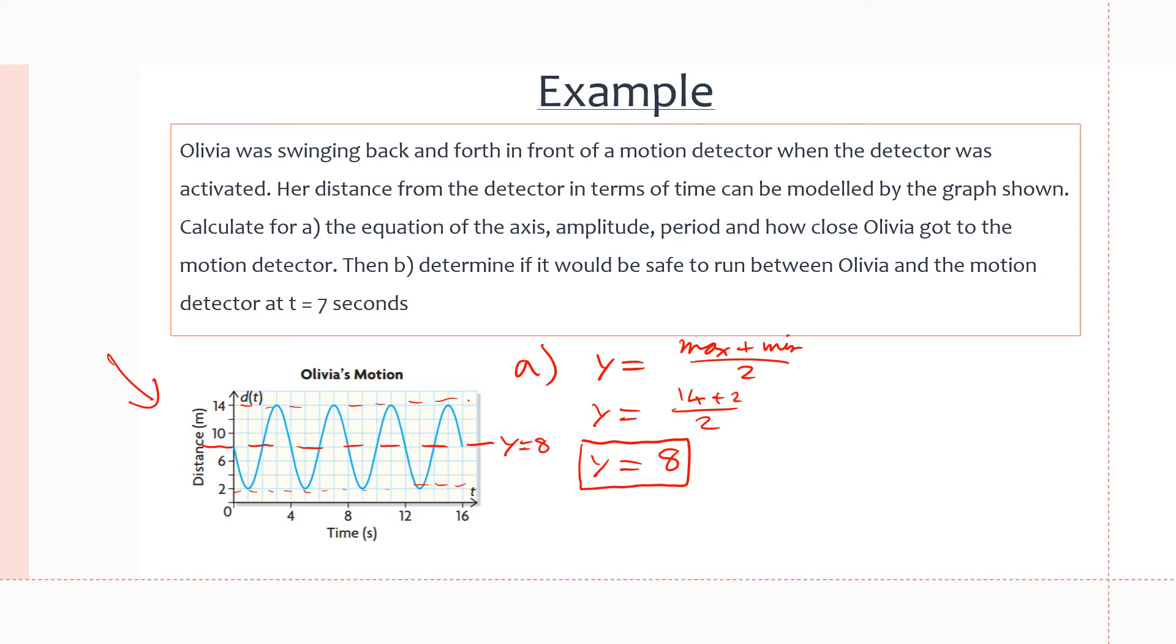Next, we want the amplitude, and the amplitude is the distance between the axis and the minimum or maximum value. From the maximum to the axis we have 1, 2, 3 squares, so we have a distance of 3. As well, from the axis to the minimum value we have a distance of 3. So amplitude equals 3.